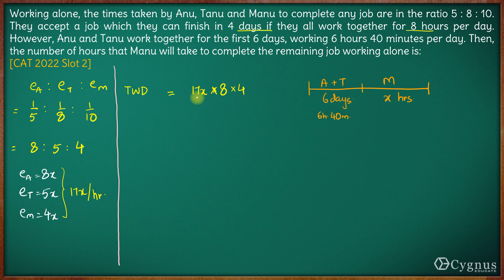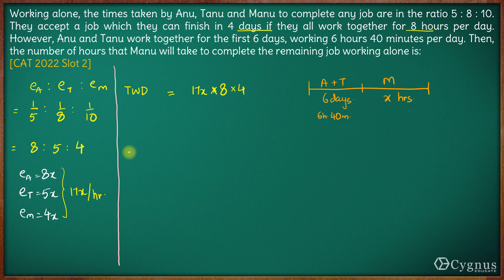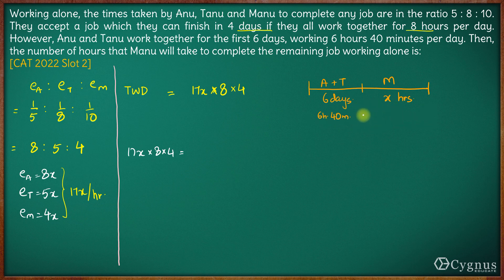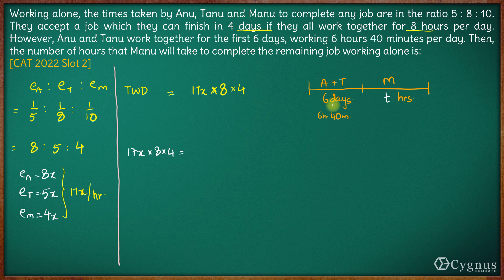The total work to be done is still 17x × 8 × 4. This equals the work done in the first 6 days by Anu and Tanu, plus the work done by Manu in the next t hours. The combined efficiency of Anu and Tanu is 13x (8x + 5x), and they work for 6 hours 40 minutes, which is 20/3 hours each day for 6 days.